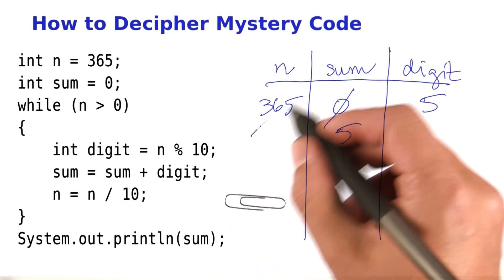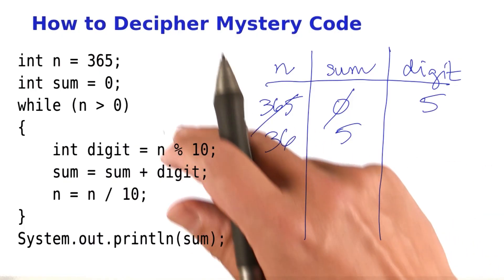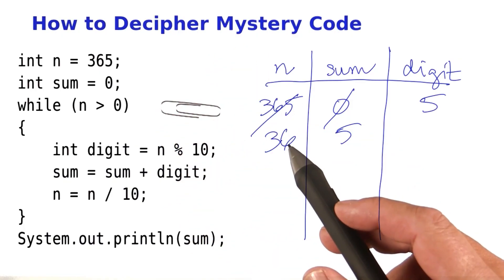N is n divided by 10. It's an integer division. So we discard the remainder. We move to the top of the loop. Is n greater than 0?